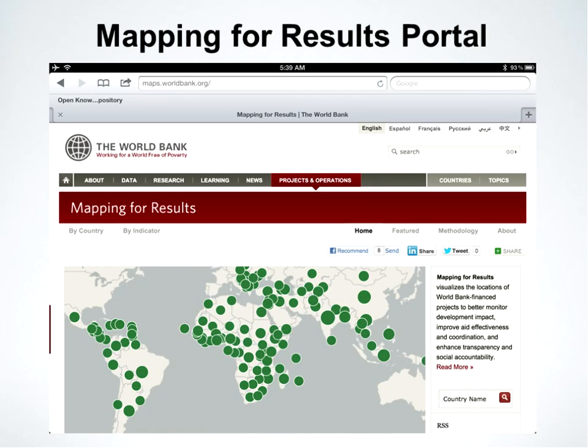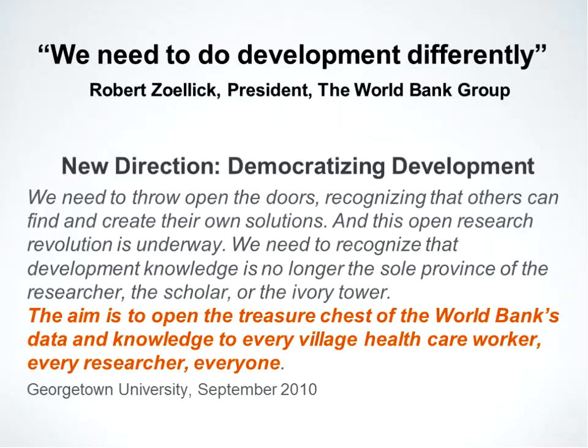One example is the Mapping for Results portal, which maps World Bank projects worldwide — the green dots on the map represent projects the World Bank has financed. You can click on them to get detailed information about the project, its objectives, what it cost, whether it's been completed, and whether the anticipated outcomes were achieved. In a seminal speech Bob Zoellick gave at Georgetown University in 2010, he talked about the need to do development differently, and among other things said the aim was to open up the treasure chest of the World Bank's data and knowledge to everyone in the world.